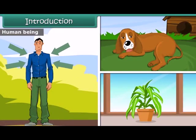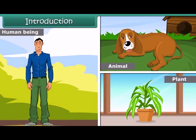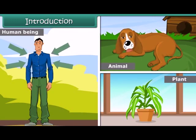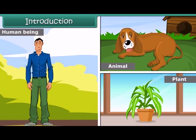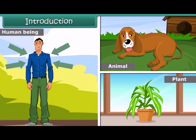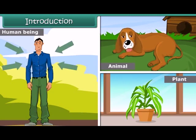Introduction: Human beings, animals, and plants depend on oxygen to survive. While some animals resemble human beings in their techniques of respiration, some others have completely different respiratory mechanisms. Plants also have a unique way of breathing. In this lesson, we will study respiration in plants and animals in detail.